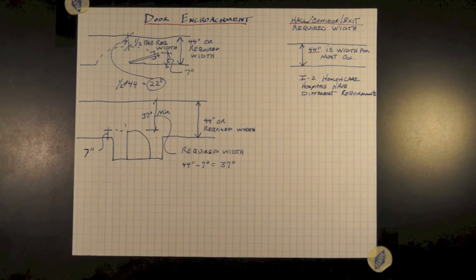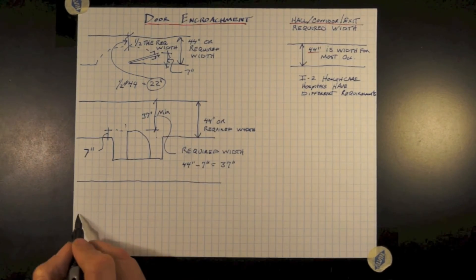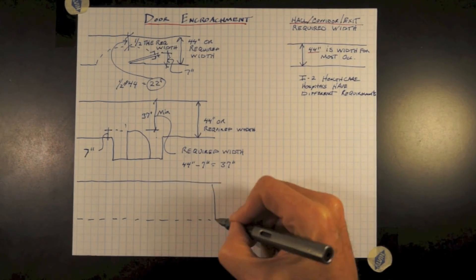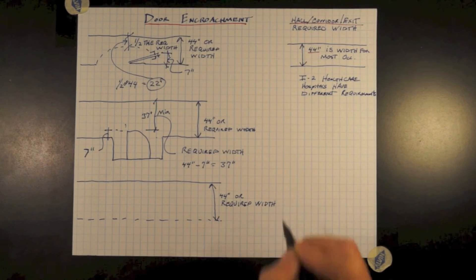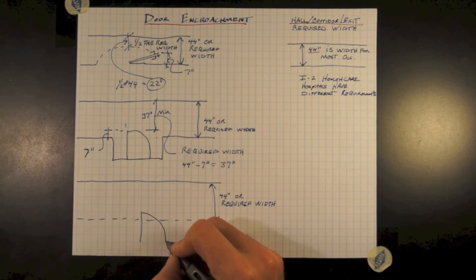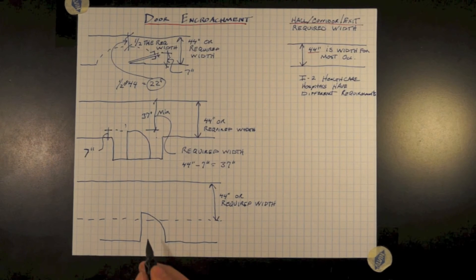Yet another scenario is where we have a widened corridor, hallway, exit passageway. Our required width being 44 inches, and we want to have a door opening onto it, but we don't want to pocket the door.